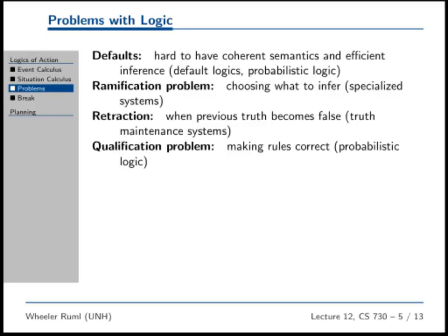This last problem is the big one — the qualification problem — and I think it's the one I asked about on the exam last year. A lot of people think this is the downfall of AI. The classic example due to John McCarthy is starting your car. You turn the key and the car starts. Well, that's not quite true — the battery has to be good, you need gasoline, the starter needs to work, the fuel line needs to not be clogged or frozen, it needs to be the right key, and all the engine management unit computers need to work.